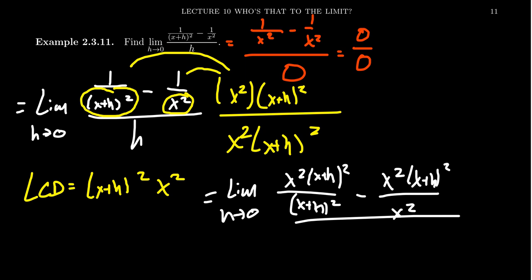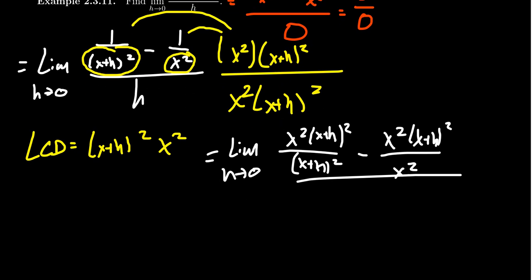Let me give you a tip. When it comes to a denominator of a fraction, leave it factored. We do not multiply out denominators. It is a fool's errand. It doesn't provide you any benefit. It just adds extra workload that you're going to have to undo anyways when you have to factor it. So we're going to leave the denominator factored. h times x² times (x+h) quantity squared.